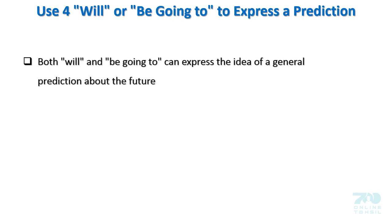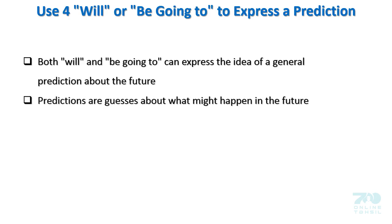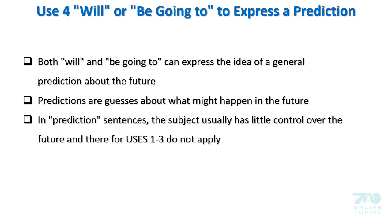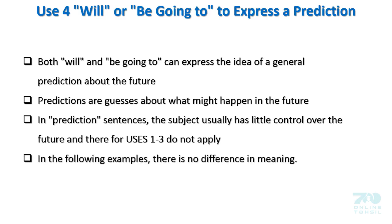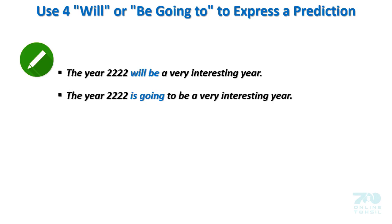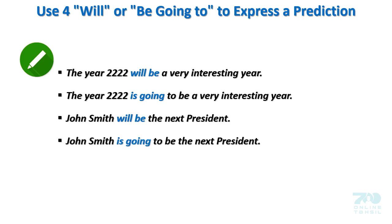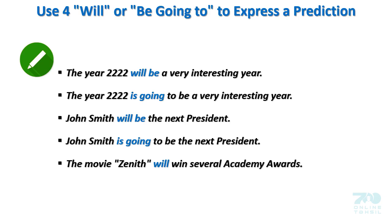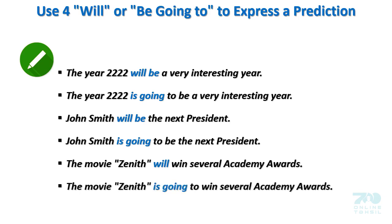Use 4: will or be going to express a prediction. Both will and be going to can express the idea of a general prediction about the future. Predictions are guesses about what might happen in the future. In prediction sentences, the subject usually has little control over the future. In the following examples, there is no difference in meaning: 'The year 2222 will be a very interesting year.' / 'The year 2222 is going to be a very interesting year.' 'John Smith will be the next president.' / 'John Smith is going to be the next president.' 'The movie The Knit will win several Academy Awards.' / 'The movie The Knit is going to win several Academy Awards.'